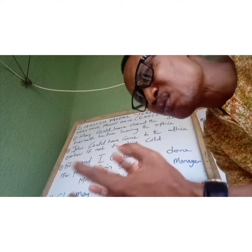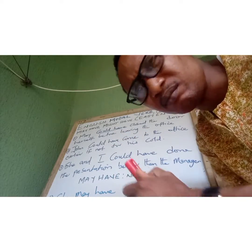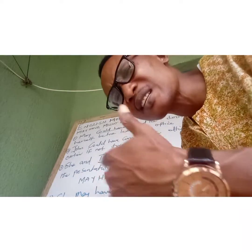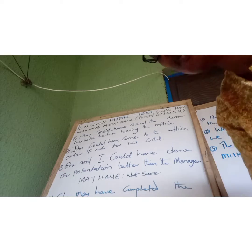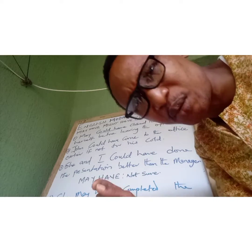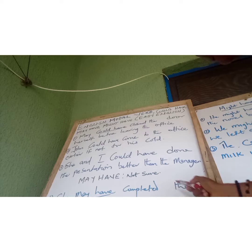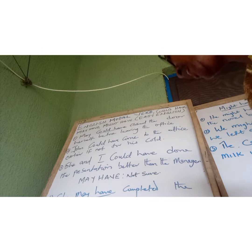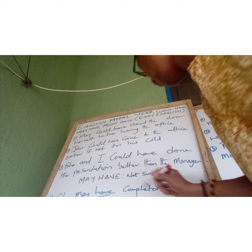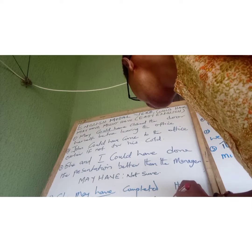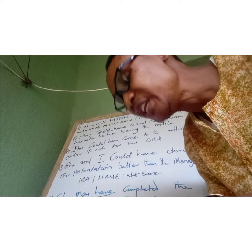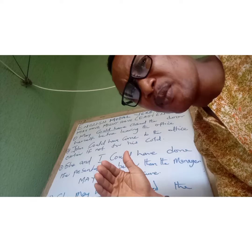'May have' is used when you are not too sure of something — it expresses a lack of certainty or uncertainty. For example: 'She may have completed the cleaning before we get home.' I suspect that my sister may have completed the sweeping of the house, she may have completed the washing of the clothes, she may have completed the cleaning of the living room — before we get home.